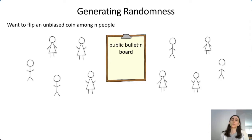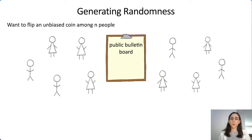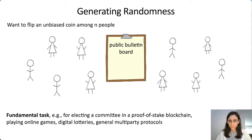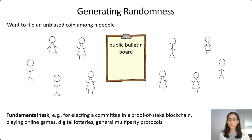I want to start with the task of generating randomness among N people. The model we'll use throughout this talk is where many people have access to a public bulletin board, and the goal is for them to agree on an unbiased coin. This is an incredibly fundamental task, with numerous applications like electing a committee in a blockchain setting, online games, digital lotteries, or any multi-party setting requiring trusted randomness.